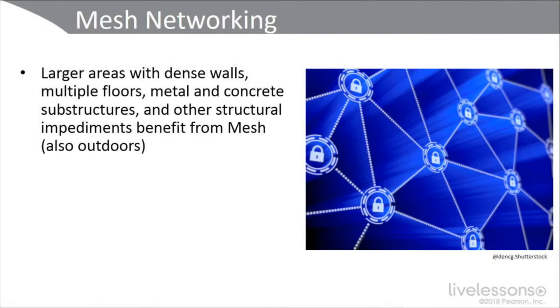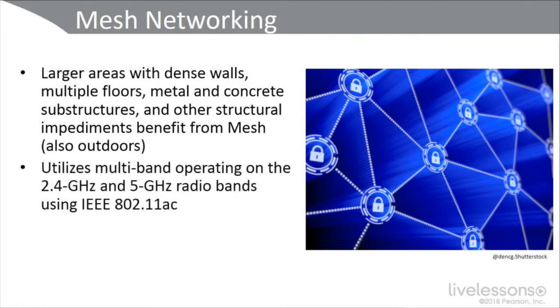The third topic is mesh networking — advanced networking that works well in larger areas like manufacturing. For example, a medium-sized manufacturing firm with dense walls, multiple floors, metal, concrete substructures, and other structural impediments. Mesh can also be used outdoors in amusement parks, city parks, concert venues, or metropolitan municipalities.